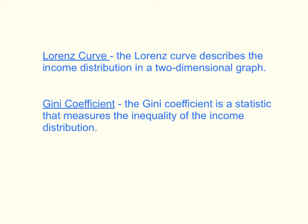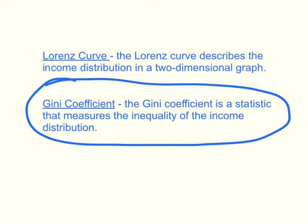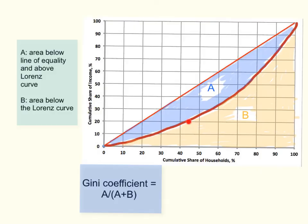Now let's talk about the second tool social scientists use to measure inequality: the Gini coefficient, which is a statistic — a number. On the Lorenz curve graph, we designate two areas: Area A is above the Lorenz curve but below the line of equality, and Area B is below the Lorenz curve and above the horizontal axis.